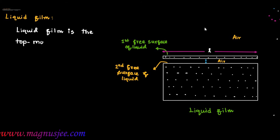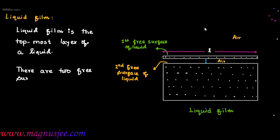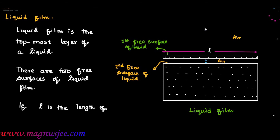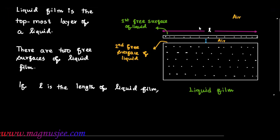A liquid film is the topmost layer of a liquid. There are two free surfaces of the liquid film. L is the length of the liquid film. If L is the length of the free surface of the liquid film, then 2L...